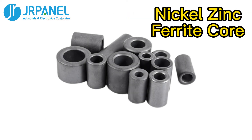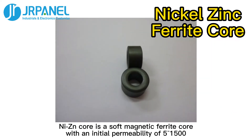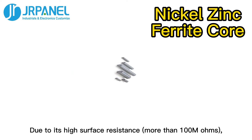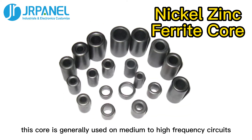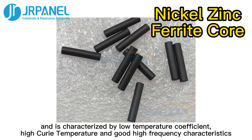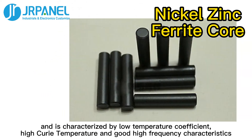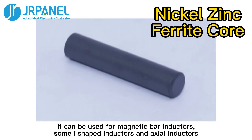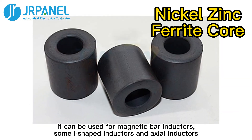Second, nickel zinc ferrite core. NiZn core is a soft magnetic ferrite core with an initial permeability of 5 to 1500. Due to its high surface resistance, this core is generally used on medium to high frequency circuits. This type of core also causes low loss and is characterized by low temperature coefficient, high Curie temperature, and good high frequency characteristics. Also, due to the large saturation flux, it can be used for magnetic bar inductors, semi-shaped inductors, and axial inductors.